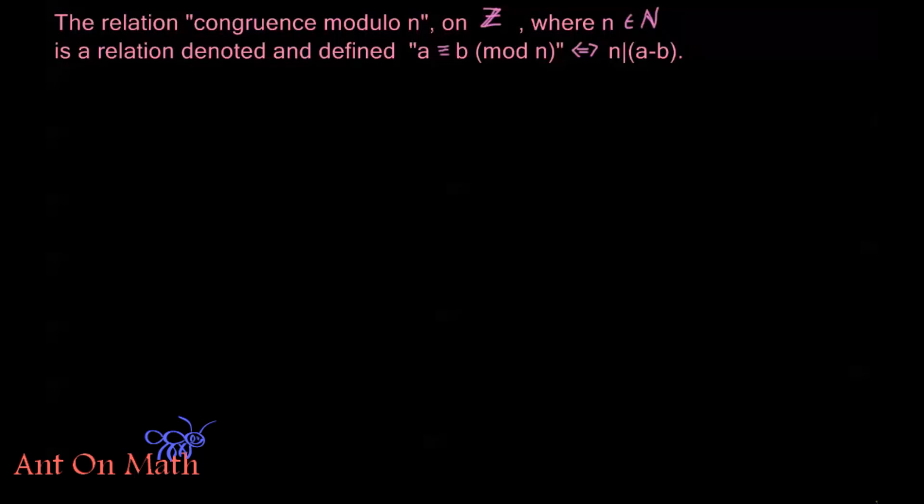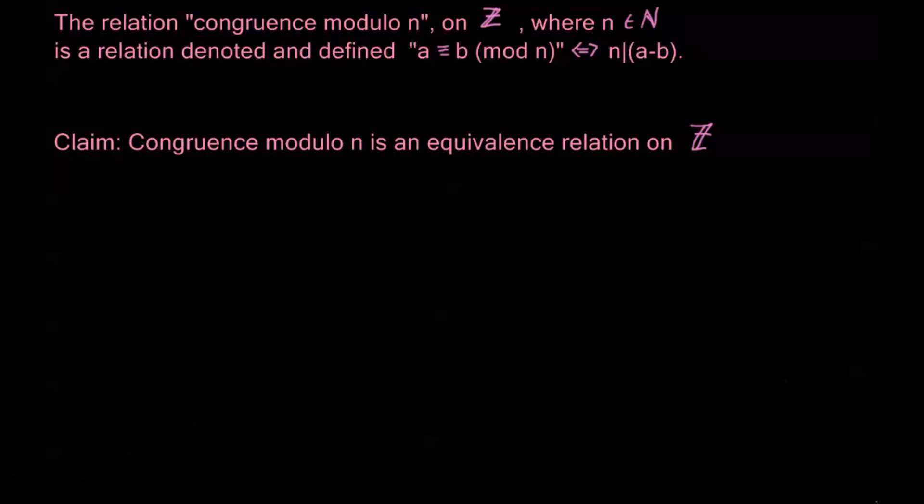Now, I want to make a claim here. I want to claim that the congruence relation, as I've defined it here, is an equivalence relation on the integers z. Now, as we talked about in the last video, for a relation to be an equivalence relation, it needs to be all three: symmetric, reflexive, and transitive. So, let's just go ahead and go through and we'll check if this is going to be true.